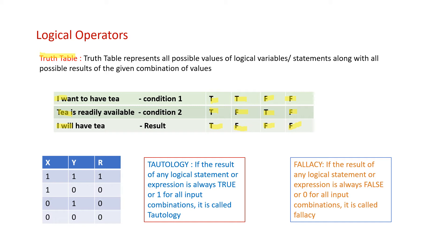This is called a truth table. We can represent it using logical variables x and y, where 'I want tea' becomes x, 'tea is readily available' becomes y, and the result is r. The values T, T, F, F for condition 1 become 1, 1, 0, 0 and T, F, T, F for condition 2 become 1, 0, 1, 0. The result r — T, F, F, F — becomes 1, 0, 0, 0. We will see more of this in further videos.